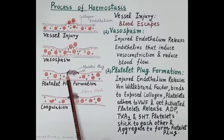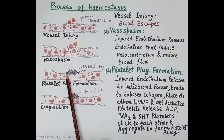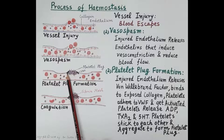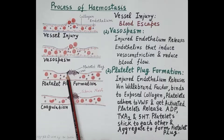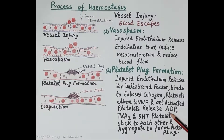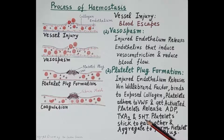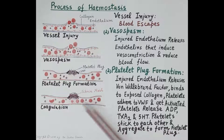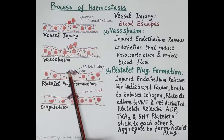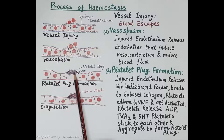Vasospasm is followed by the second step: formation of the platelet plug, also termed primary hemostasis. The injured endothelium releases a factor called von Willebrand factor. This von Willebrand factor binds to the exposed collagen. The platelets then bind to this von Willebrand factor, and once bound, the platelets become activated. These activated platelets produce adenosine diphosphate (ADP), thromboxane A2, and 5-hydroxytryptamine.